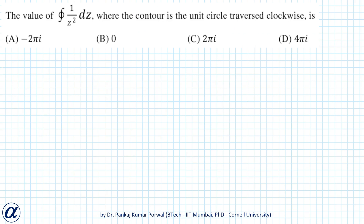For Example 5, we find the contour integral of 1/z² where the contour is the unit circle traversed clockwise. The function 1/z² has a finite number of terms and there is no term with a simple pole. So the residue of this function is 0, and therefore the contour integral is also 0.